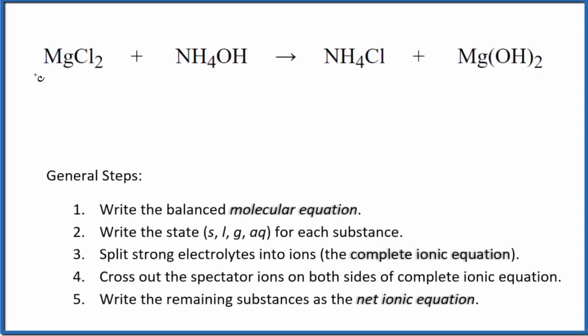Let's write the balanced net ionic equation for MgCl2 plus NH4OH. This is magnesium chloride and this is ammonium hydroxide. So the first thing we need to do when we write the net ionic equation, we need to balance the molecular equation.